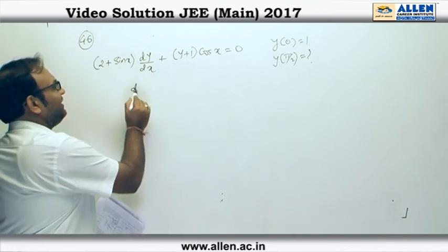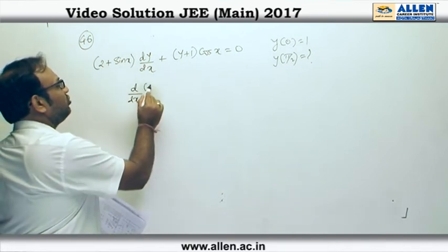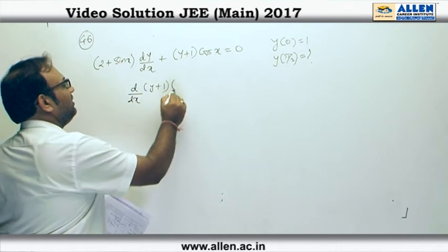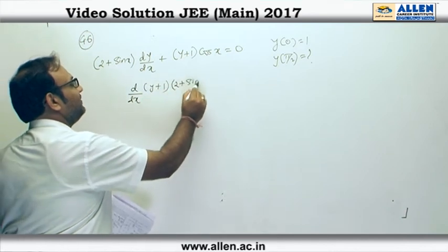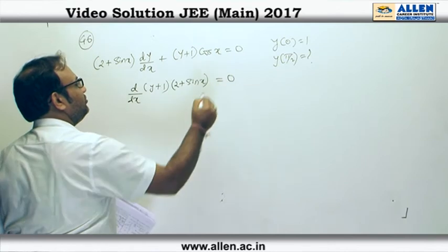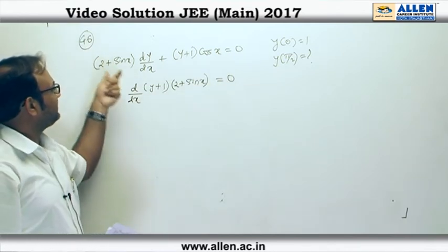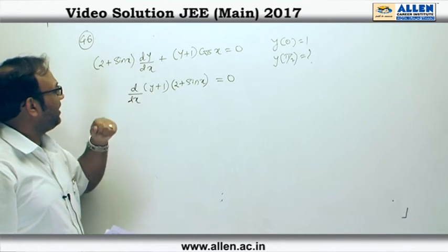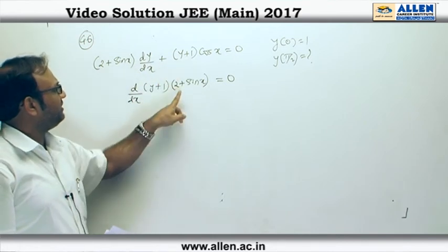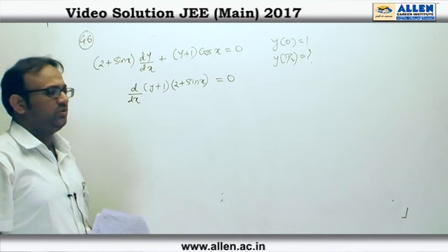So it seems to be a product rule applied. Therefore, I can directly say that this is nothing but d/dx of (y+1)(2+sin x), which is given to be equal to 0. You can cross-check: if we apply the product rule, 2+sin x times the differentiation of this is dy/dx, y+1 as it is, 2+sin x derivative is cos x over here.